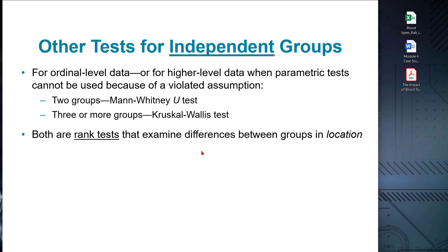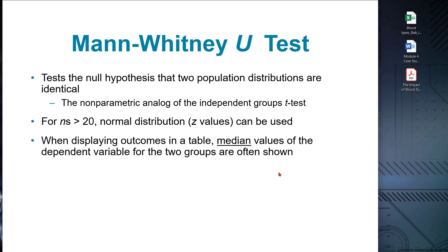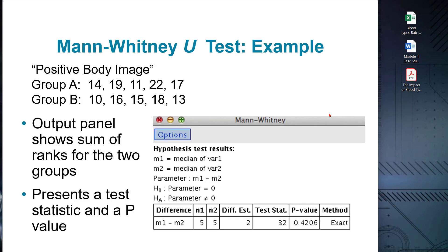The Mann-Whitney-U test is a non-parametric equivalent of the independent samples t-test. It assesses whether there is a significant difference between the distributions of two independent groups or treatments. This test is suitable for ordinal or rank data and can be done easily by computer software. It works by ranking all the observations from both groups combined and comparing the sums of ranks for the two groups. The test produces a U statistic and corresponding p-value, and if the p-value is below the predetermined significance level, we can conclude there is a statistically significant difference between the groups.